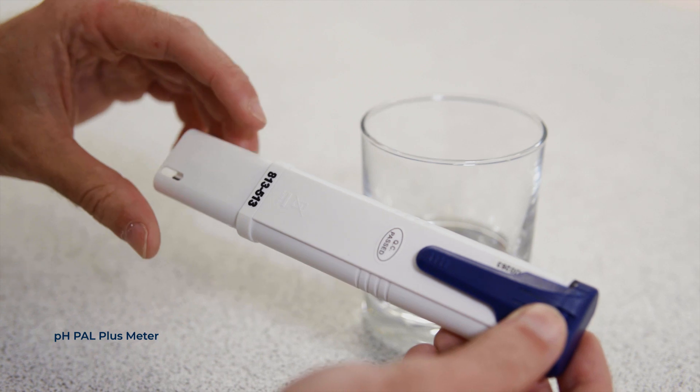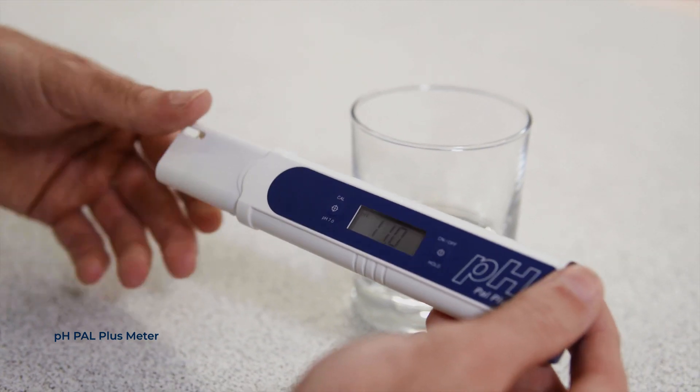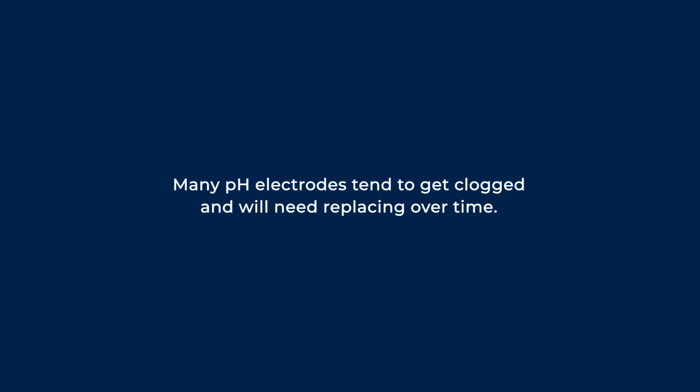Simple to use, they typically have a recalibration function for maintaining accuracy. Many pH electrodes, particularly ones used for semi-solid applications, tend to get dirty and clogged. This means they'll need to be replaced over time.